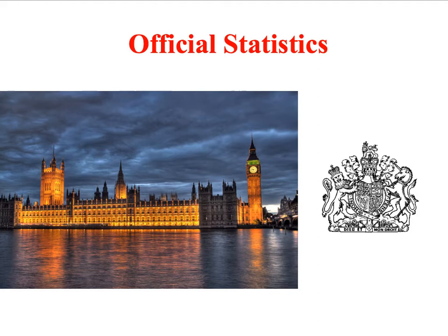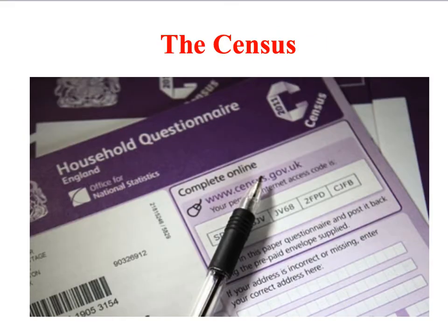The most important source of secondary quantitative data in sociological research are official statistics. Official statistics are quantitative data that have been produced either by the national government or by local government. The most famous example of official statistics in the UK is the census.